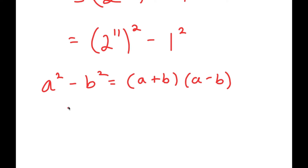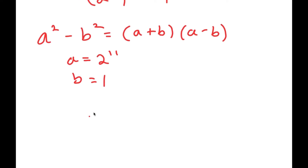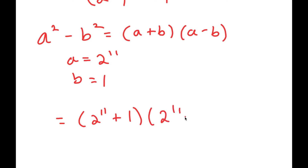Just to clarify, a is 2 to the power of 11 and b is 1. So now I get 2 to the power of 11 plus 1, times 2 to the power of 11 minus 1.